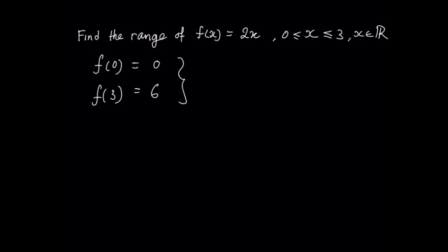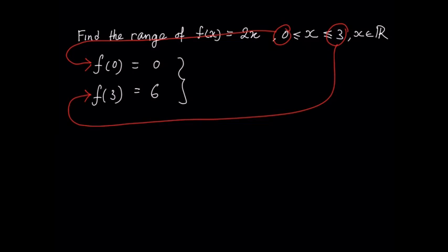So, by taking the endpoints of the domain, substituting them into the function f of x equals 2x, it means that I can find the range of this function. So, f of x is going to be greater than or equal to 0 but less than or equal to 6. And it's quite common to write this as y is greater than or equal to 0 but less than or equal to 6 because usually when we're working with functions, we're often dealing with graphical representations and the y values will obviously correspond to the range of the function.